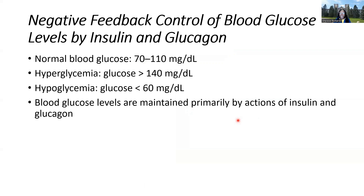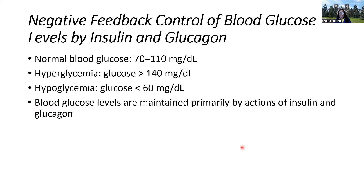The negative feedback of blood glucose is important when looking at insulin and glucagon. Insulin is released in response to increased blood glucose, and glucagon is released in response to decreased blood glucose. Normal fasting blood glucose should be 70 to 110 milligrams per deciliter. Hyperglycemia is a glucose level of 140 and higher, with 180–200 entering the diabetic range. Hypoglycemia is where blood glucose dips below 60 mg/dL. Blood glucose levels are maintained by the opposing actions of insulin and glucagon.